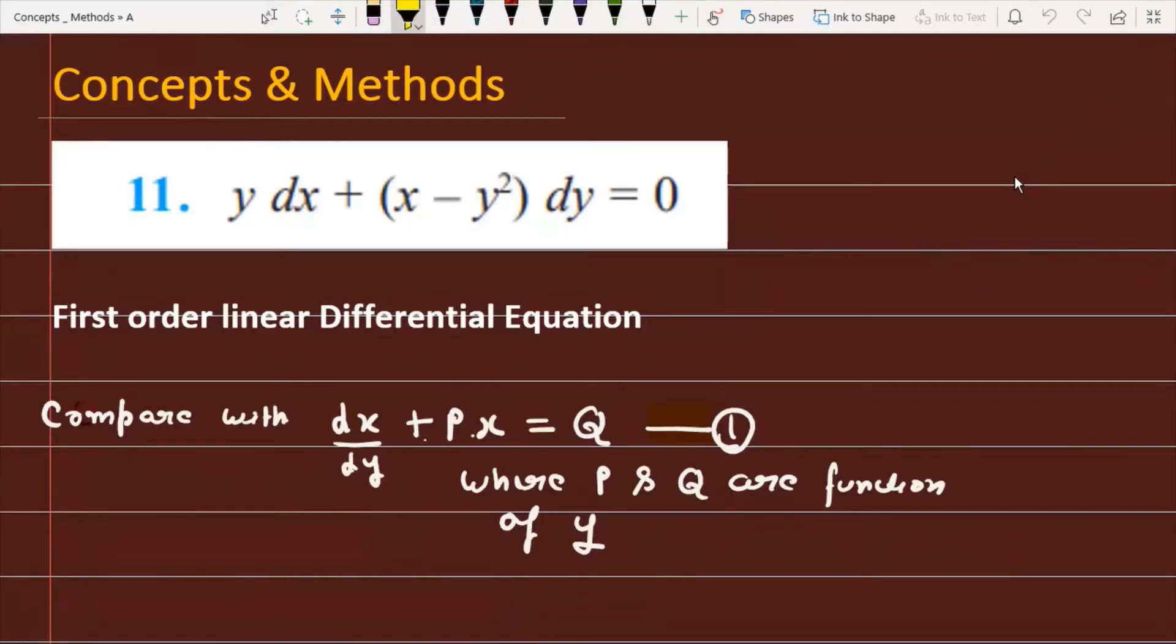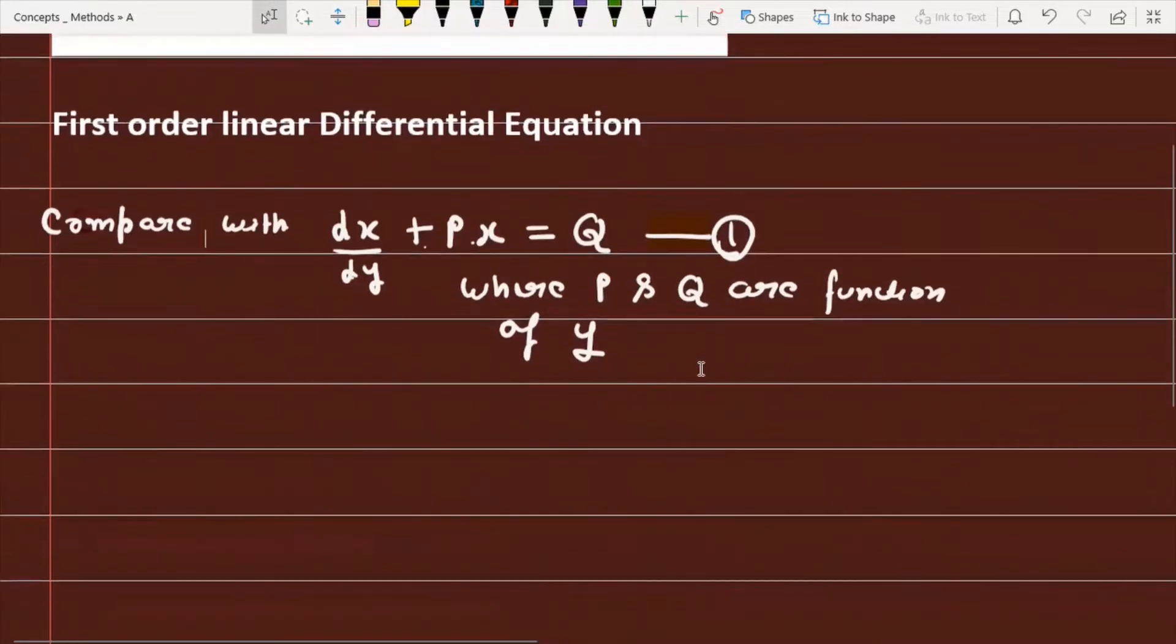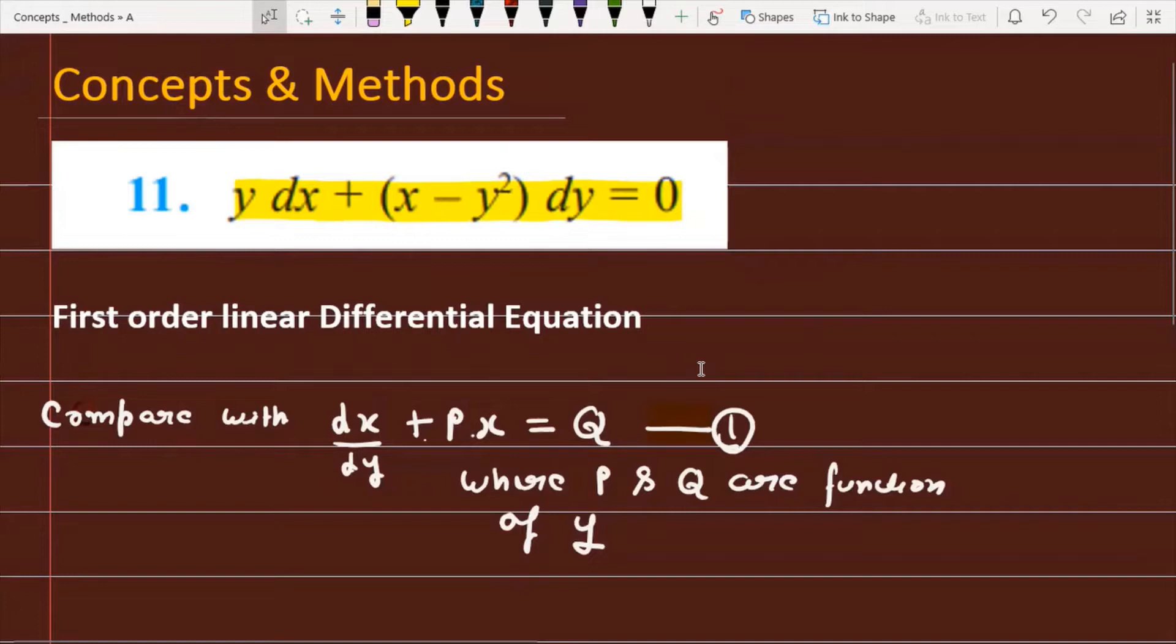The problem is y dx + (x - y²)dy = 0, and we have to find the solution for the given first-order linear differential equation. Let's see how we are going to solve this problem.